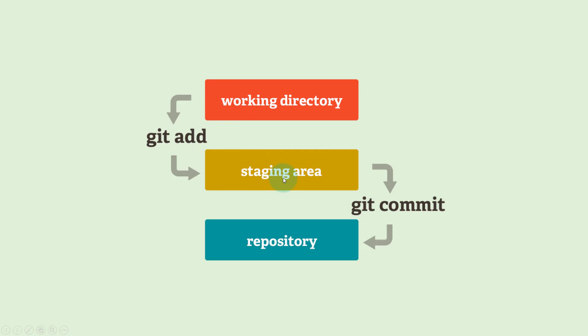This staging area is also present in your working directory itself, but for better understanding, you need to understand that these three things are logically separated. So git add moves your file from the working directory to the staging area, and git commit moves those files from the staging area to the repository, which means git is tracking those changes — you have committed the changes you made to that file.